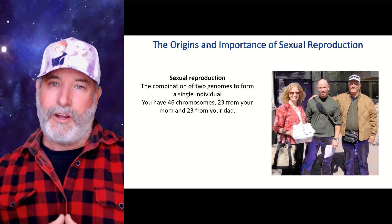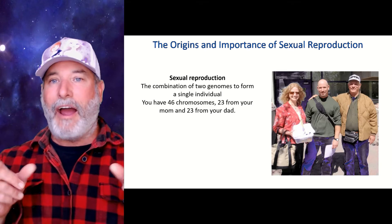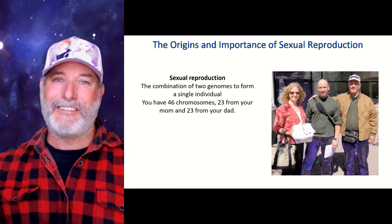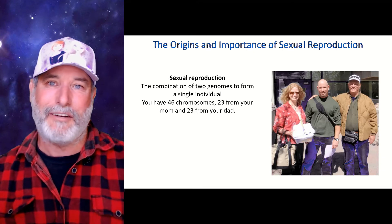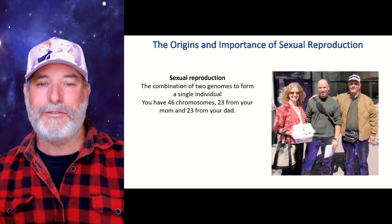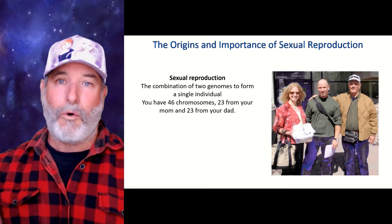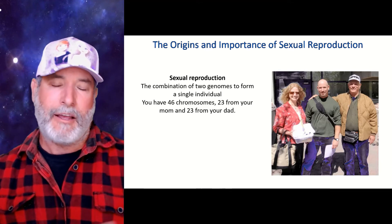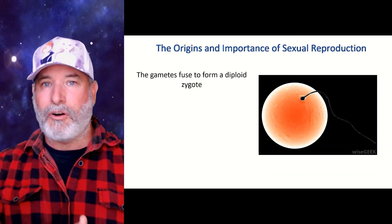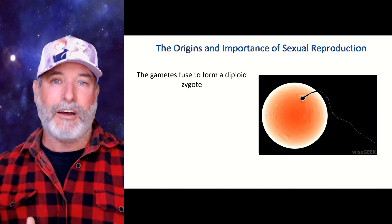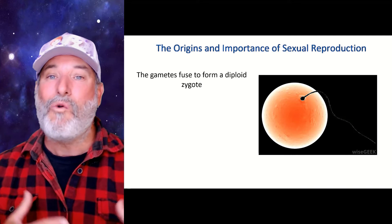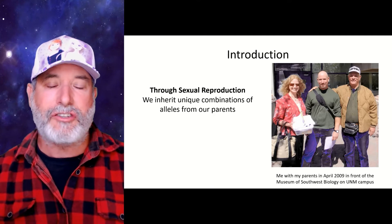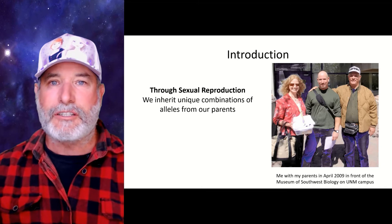Sexual reproduction is when you combine two genomes to form an individual. For example, my mom and dad — visiting the University of New Mexico in 2009 when I defended my PhD. You may have heard that you have 46 chromosomes; what you really have are 23 pairs of chromosomes — 23 from your mom and 23 from your dad. In sexual reproduction, the sperm fertilizes the egg and forms a zygote, and from that single cell, through mitosis, we grow into an adult. It's through sexual reproduction that we inherit different combinations of alleles from our parents.